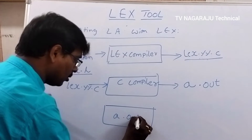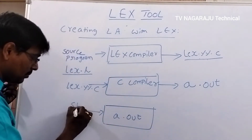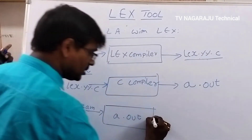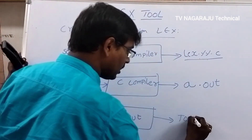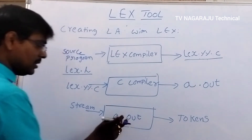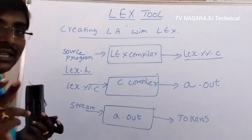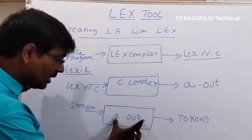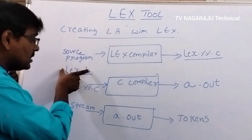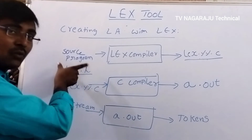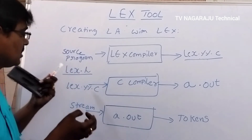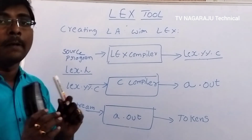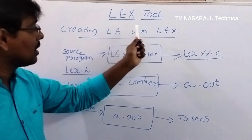The entire operation is performed by a.out. The input to a.out is simply a stream of characters, and the output is tokens. So a.out acts as the lexical analyzer. This is the way to create a lexical analyzer by using the Lex tool. Simply by using Lex we are generating a lexical analyzer. Now we will move to the file format.